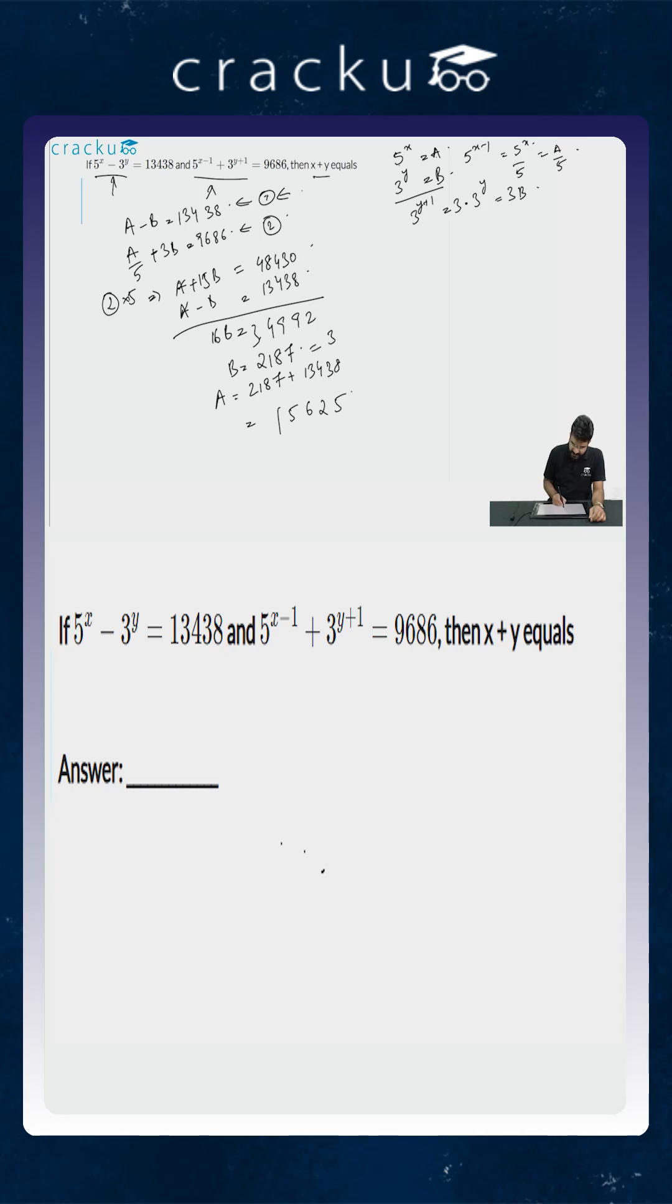So this is equal to 3 to the power y, or y is equal to 7, because 3 to the power 7 is 2187. This is equal to 5 to the power x, or x is equal to 6, because 625 into 5 into 5 equals 15625.